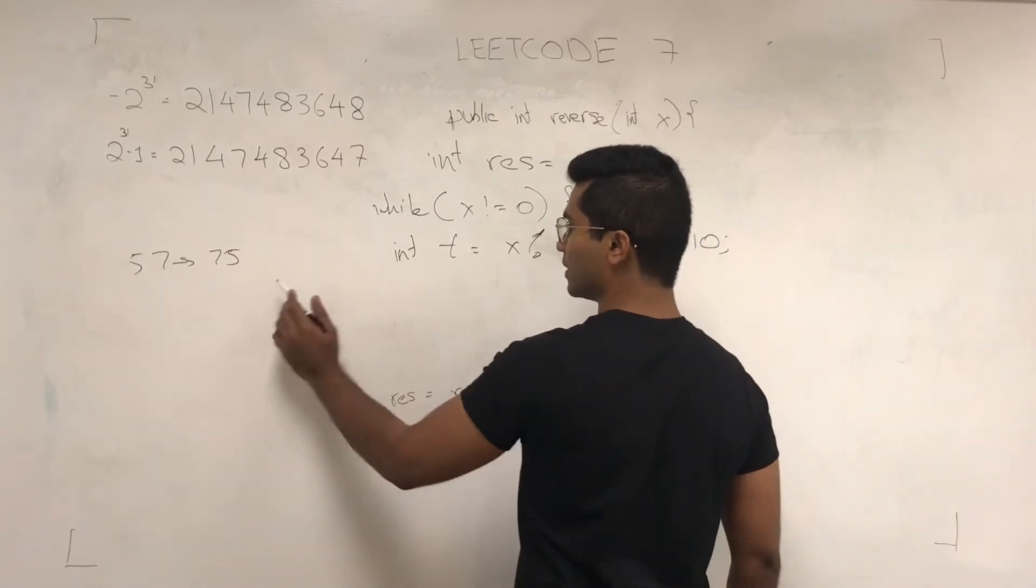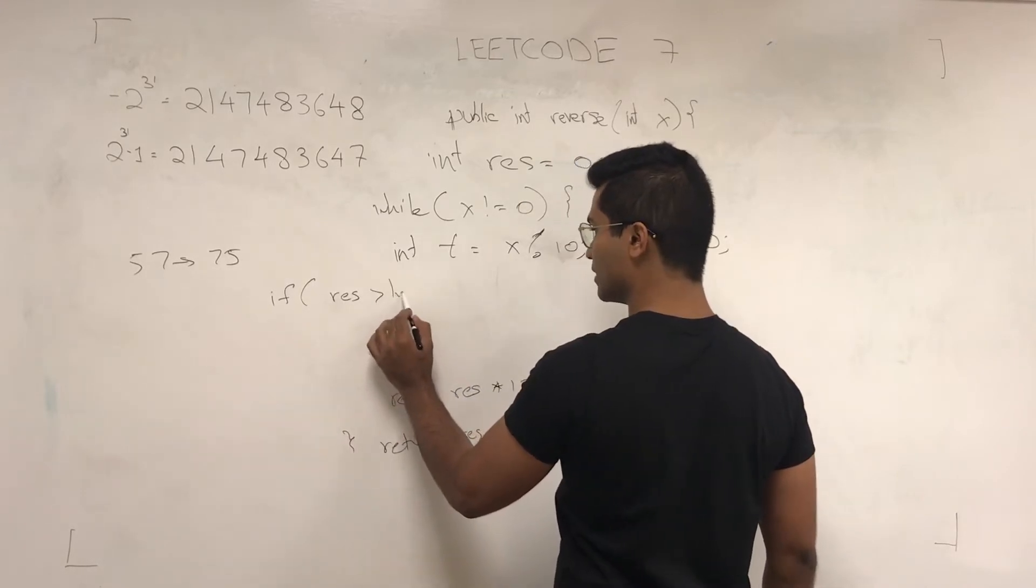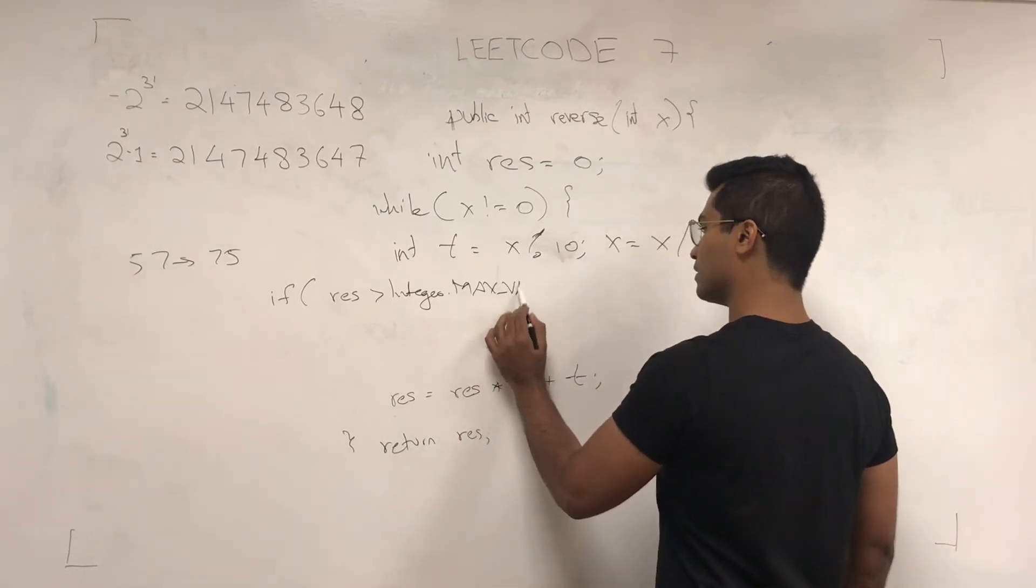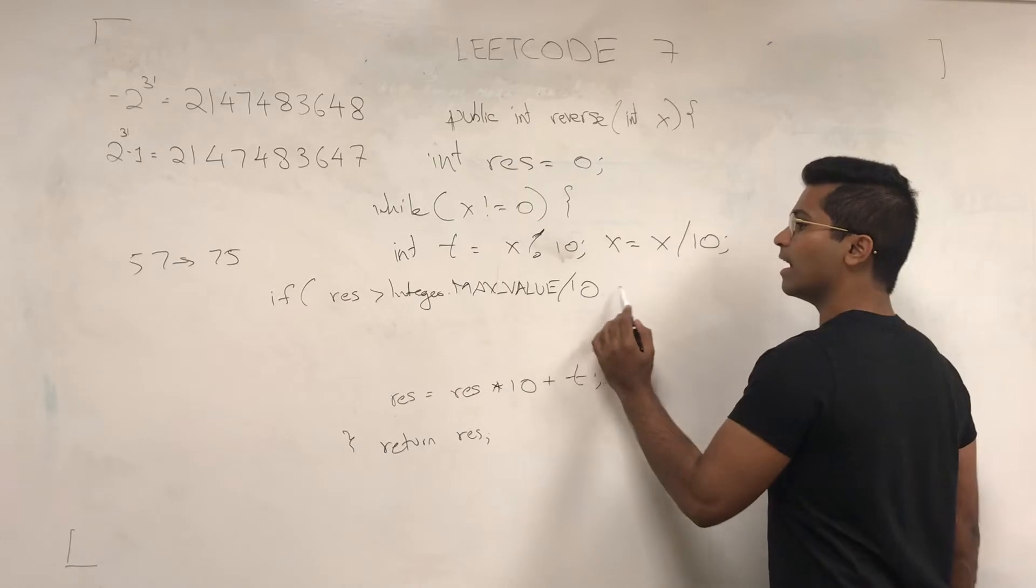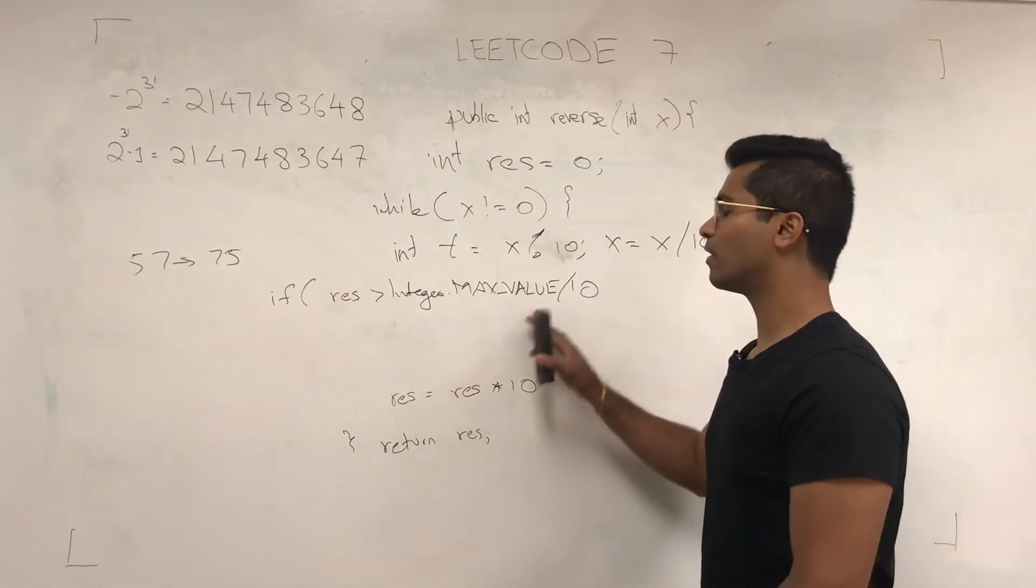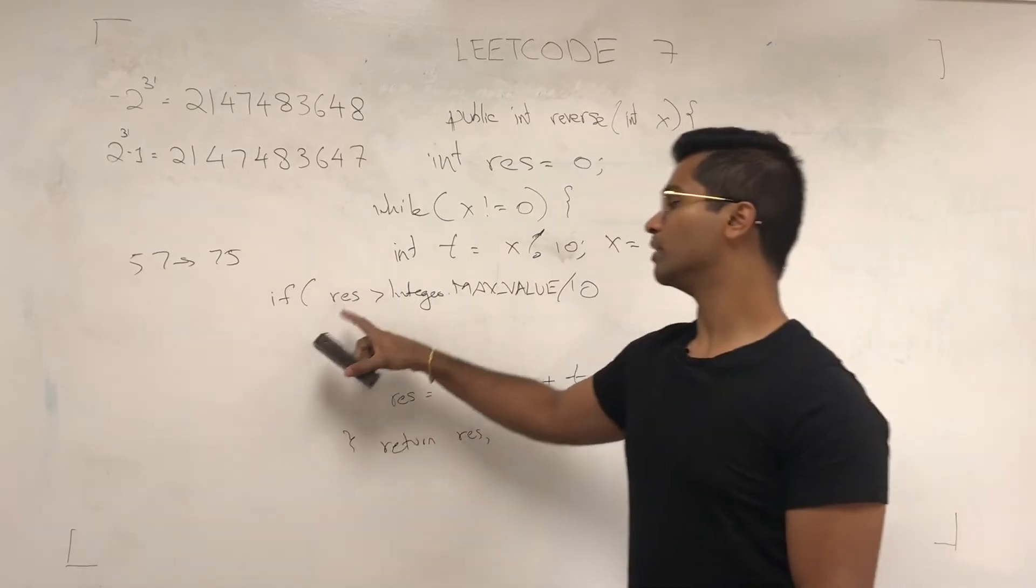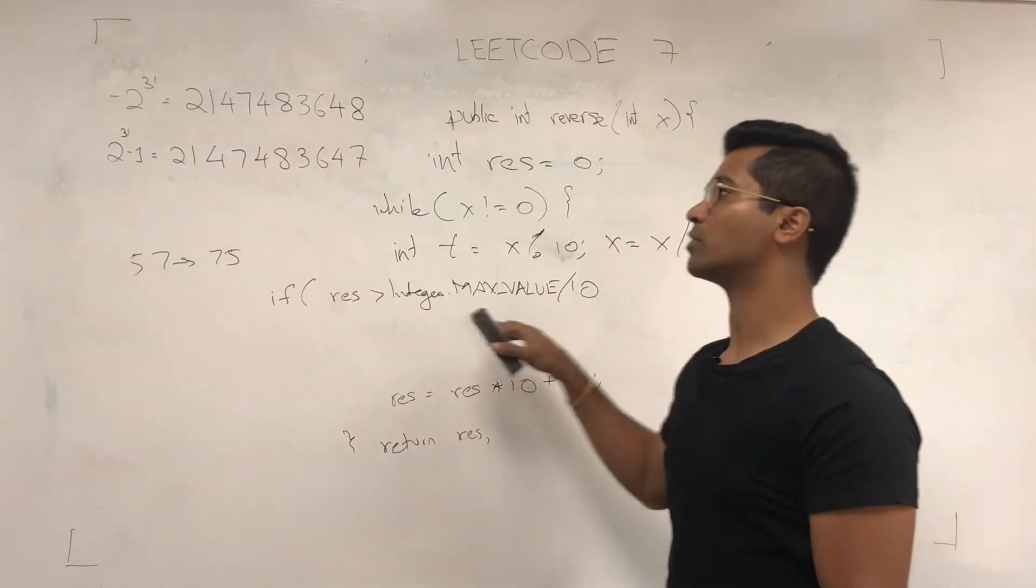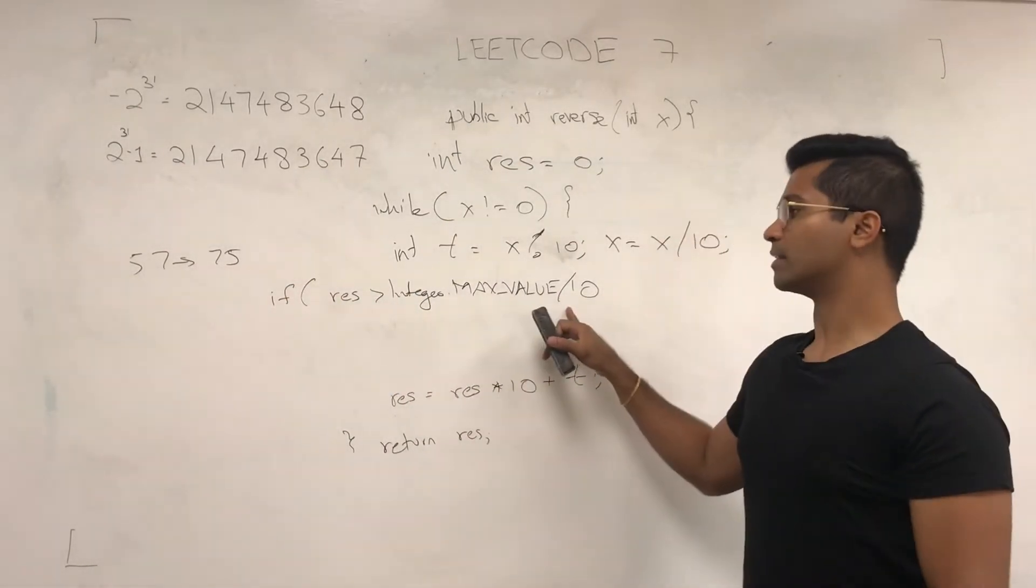Now let's write the ifs. If res is greater than integer.maxValue by 10 — I'll tell you why this is by 10. It's because at this point in time, on this iteration of the while loop, res is not the same length as integer.maxValue. It's going to be one digit less, so that's why we have to divide this by 10.